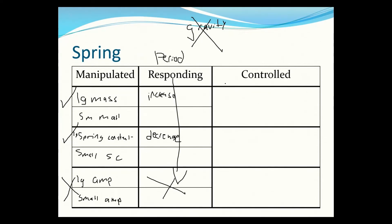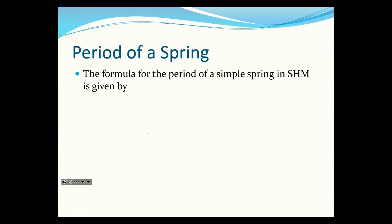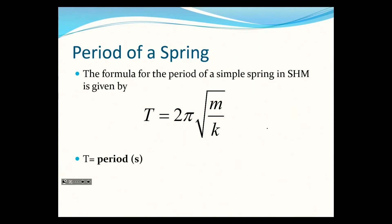So only mass and spring constant affect the spring's period. When changing each variable, we kept the others controlled — amplitude, spring constant, and gravity controlled when changing mass; mass, amplitude, and gravity controlled when changing spring constant. Looking at the formula, mass and period have a direct square root relationship, while spring constant and period have an inverse square root relationship. T is period, m is mass, and k is spring constant.